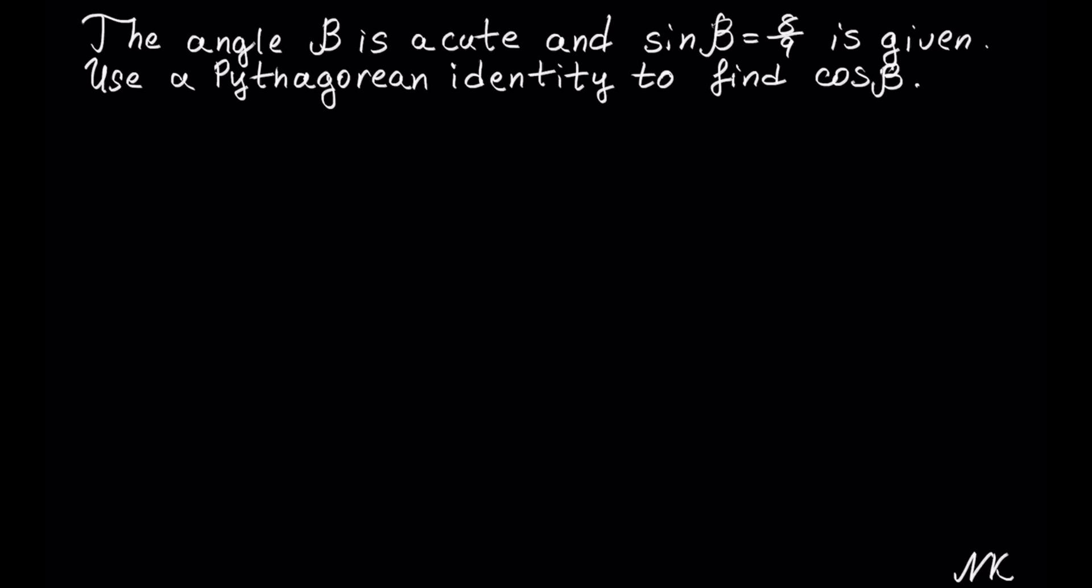The Pythagorean identity that is using cosine and sine is sin² θ + cos² θ = 1. Once we have the Pythagorean identity, we can substitute and solve.